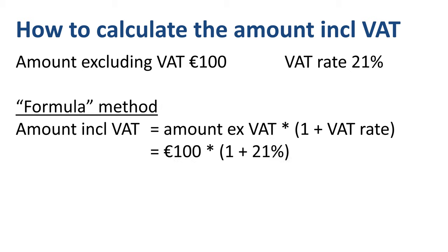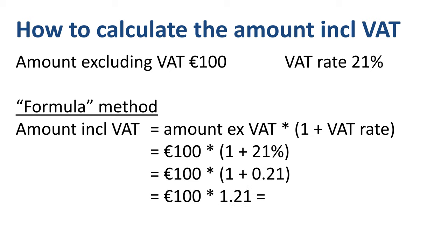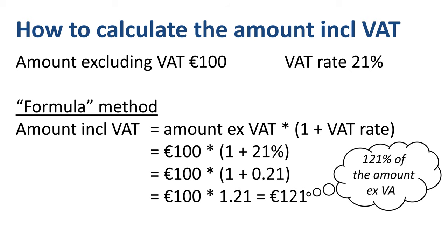Let's fill it in with numbers: 100 euros times (1 plus 21%), equal to 100 euros times (1 plus 0.21), which equals 100 euros times 1.21, which is 121 euros. In other words, with a VAT rate of 21%, the amount including VAT is 121% of the amount excluding VAT.